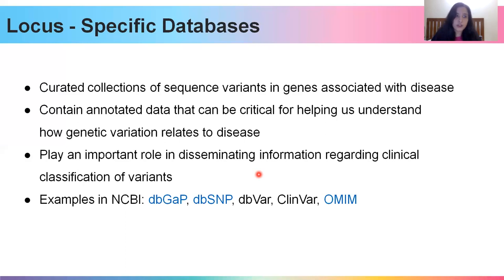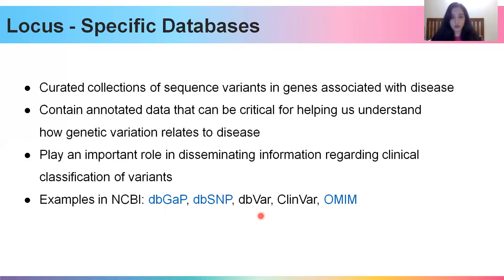There are several LSDBs already out there. If I talk only about the NCBI, we have dbGaP, which links genotypes to phenotypes; dbSNP, which covers single nucleotide polymorphisms; dbVar, which covers structural variants; ClinVar, which focuses on clinically relevant variants; and OMIM, which covers Mendelian disorders, their genes, and their variants.